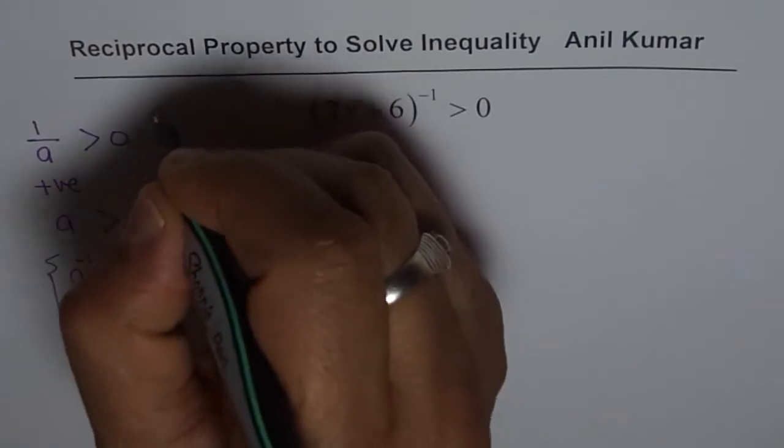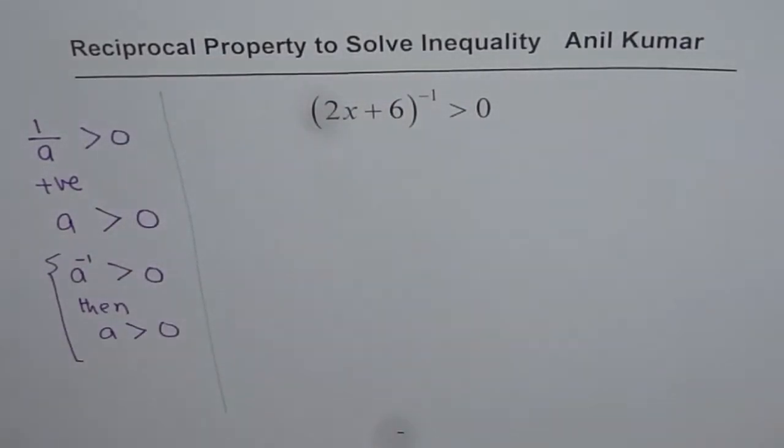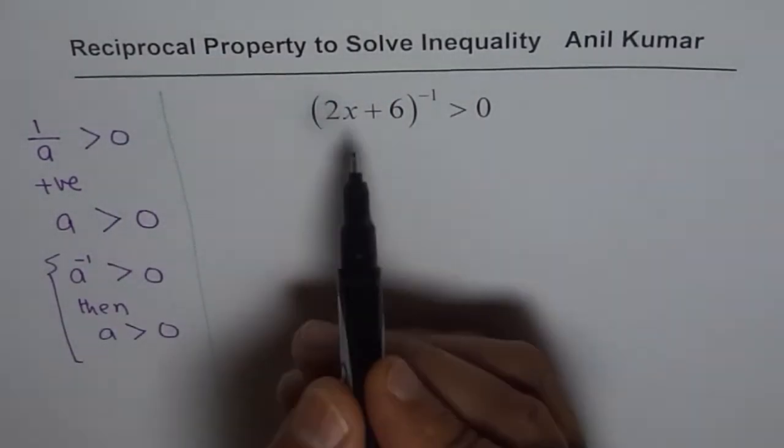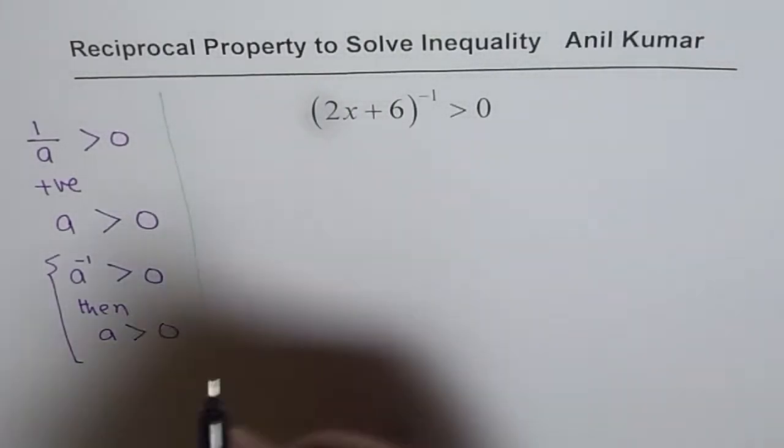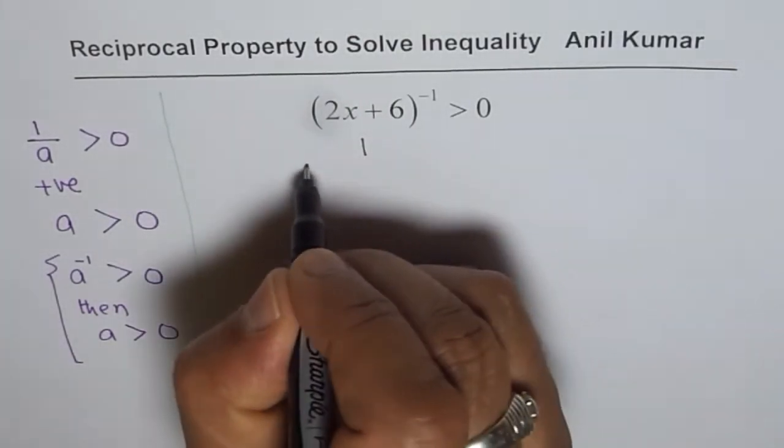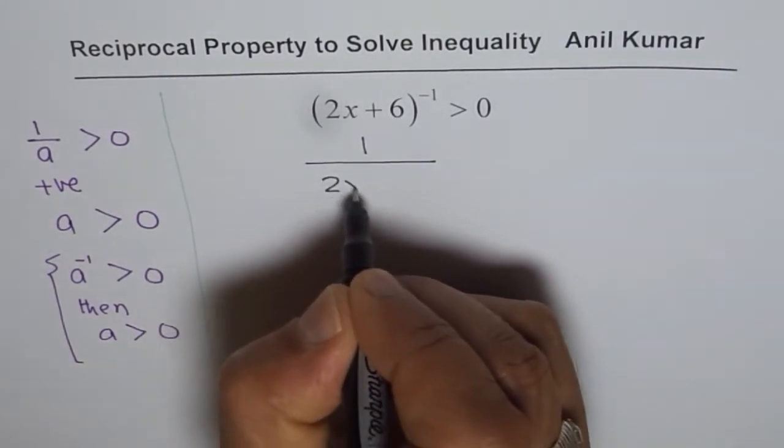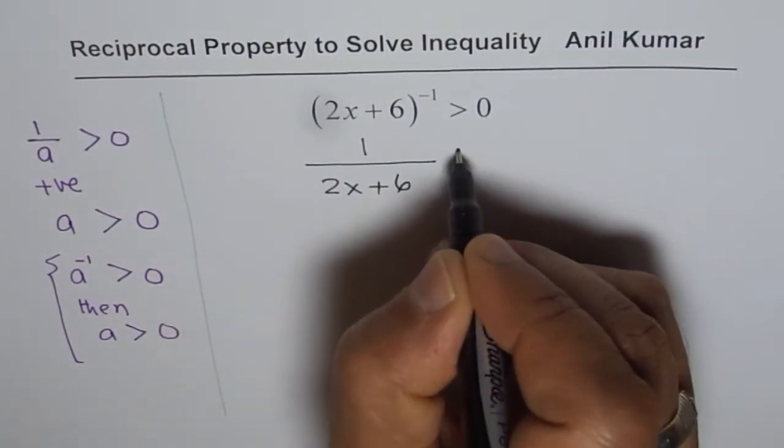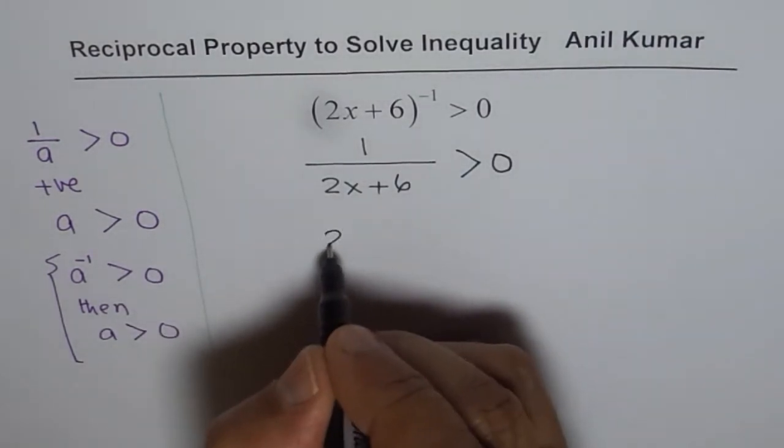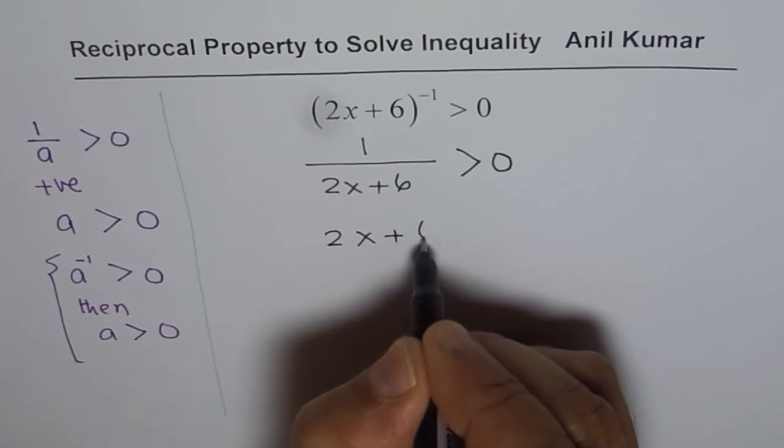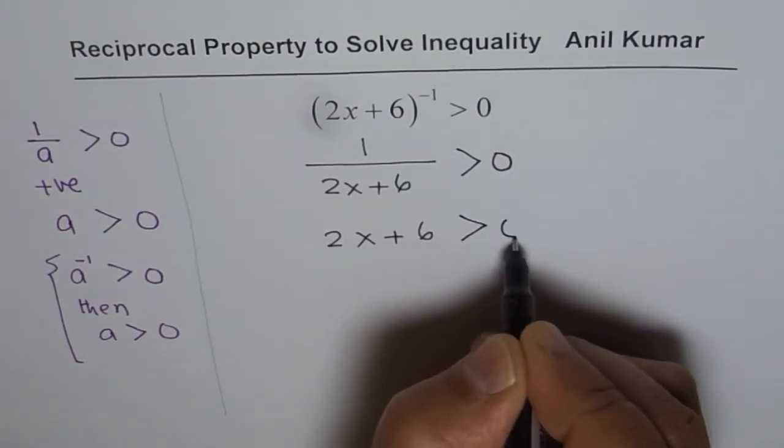So that is what we are going to apply to solve the given question. What we have here is 2x plus 6 to the power of minus 1, that is to say 1 over 2x plus 6, is greater than 0. Now from this property we know that 2x plus 6 should also be greater than 0.